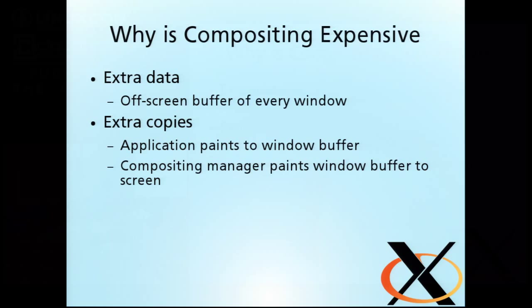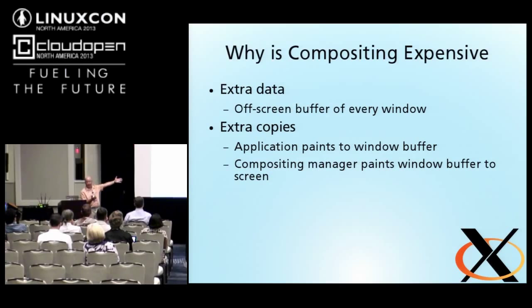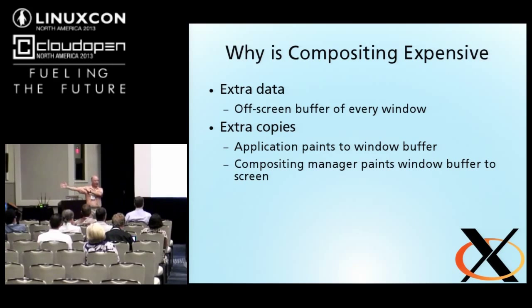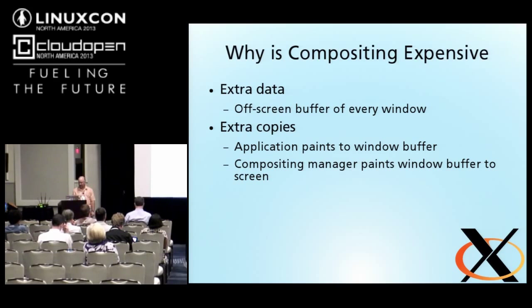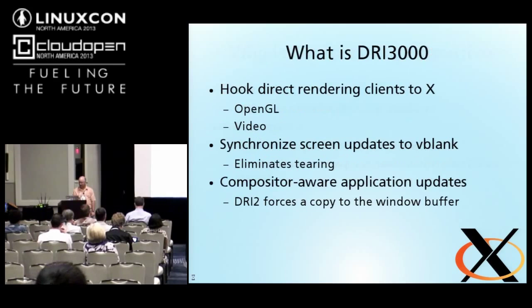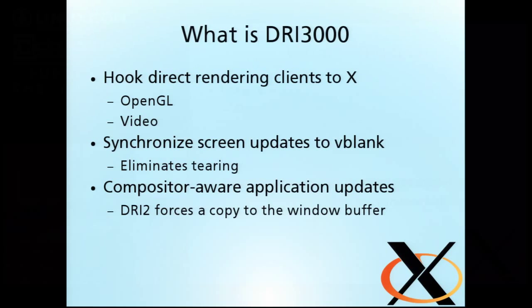Why is it expensive? We have extra data. Every single window has a copy on the screen and a copy off the screen, and the compositing manager is managing the moving of data from that off-screen copy onto the screen. So there's extra memory involved, and all this additional data motion: the application paints stuff off-screen, the compositing manager copies it onto the screen — a lot of additional transistors moving around.